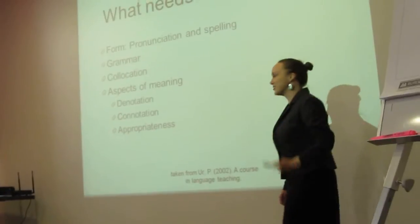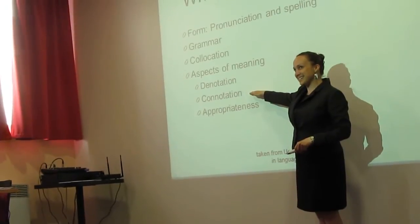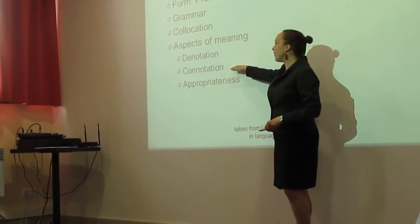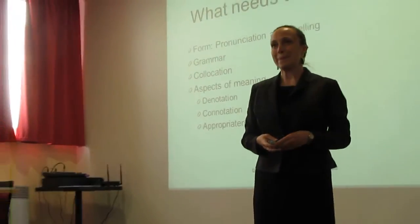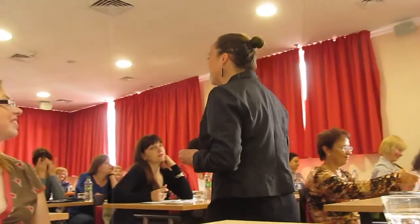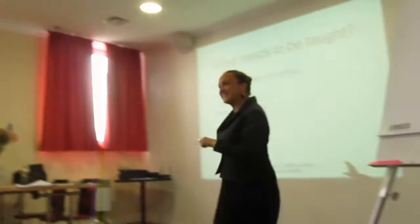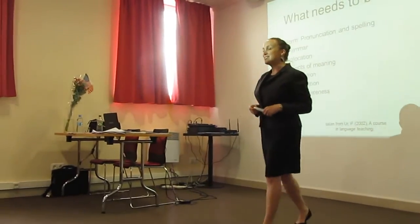We want to be teaching aspects of meaning. Let's start with connotation — that's the easiest one. How are we teaching connotation? I'm going to break you into groups, and I'd like each group to define how we teach aspects of meaning: denotation, connotation, and appropriateness. That way it's four to five people thinking together.